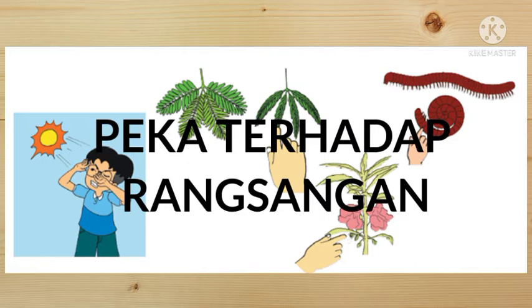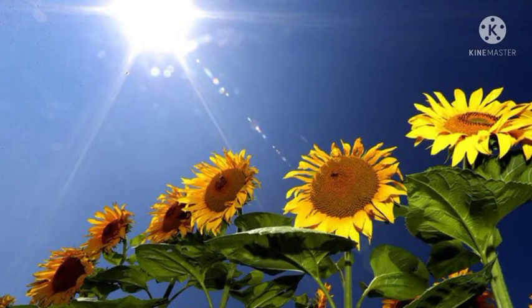Tumbuhan juga memiliki kepekaan terhadap rangsang seperti pada hewan dan manusia. Contohnya ujung batang yang selalu menghadap ke arah datangnya cahaya, dan ujung akar yang tumbuh ke bawah karena adanya gaya gravitasi. Itulah contoh dari ciri makhluk hidup peka terhadap rangsang.